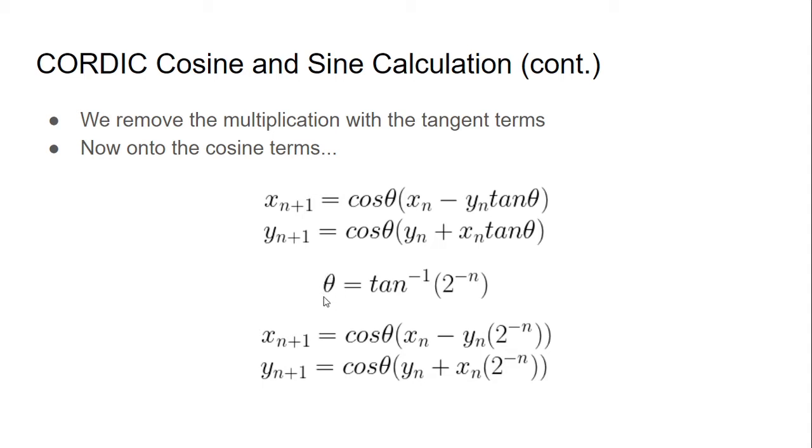So theta here is the angle that we're going to rotate for that particular iteration or step. So it's not going to get us, so theta isn't going to be the input angle. It's going to be a bunch of angles in a lookup table that we're going to either rotate clockwise or counterclockwise by until we get that target angle. So now if we have theta equals to this value here, then tangent of inverse tangent will negate and then we'll have 2 to the negative n, which you might recognize to be a simple right shift operation.